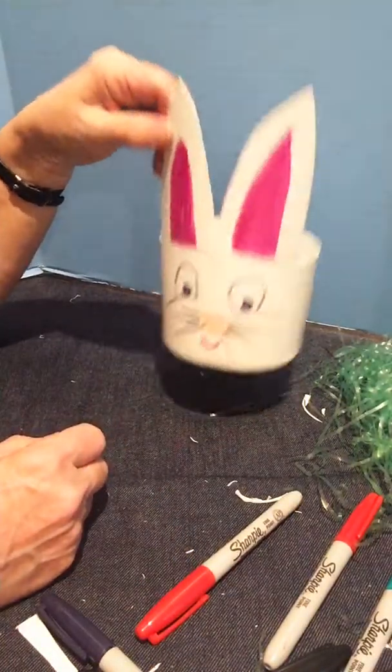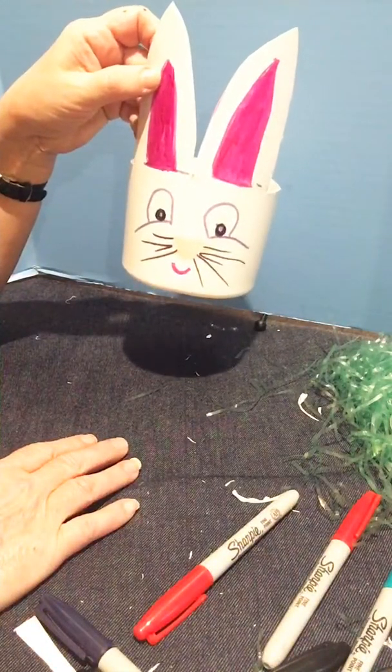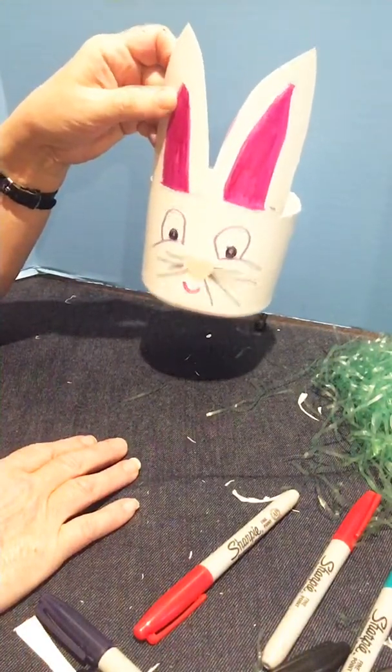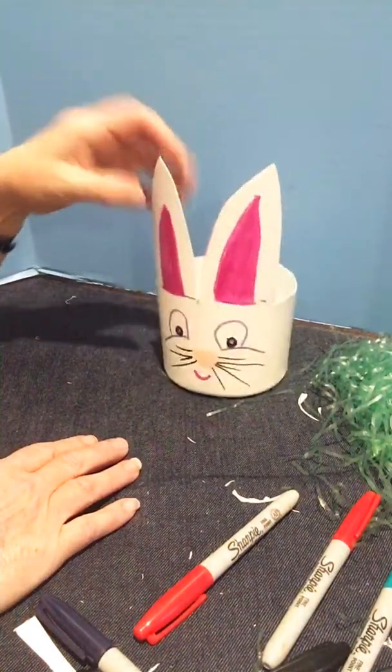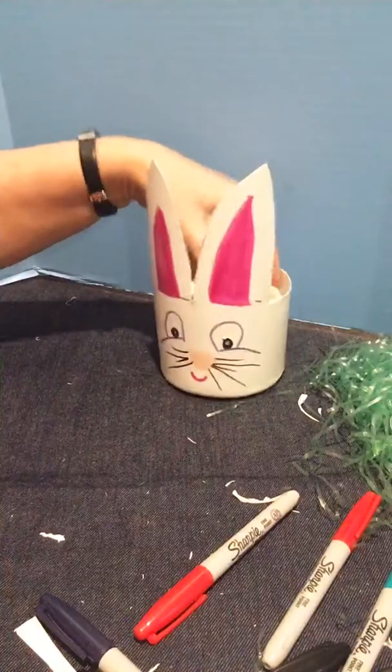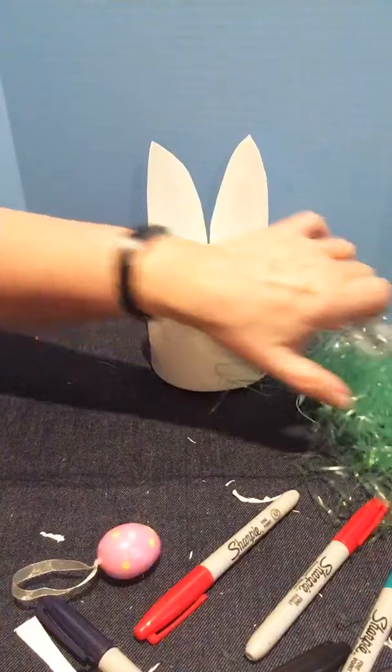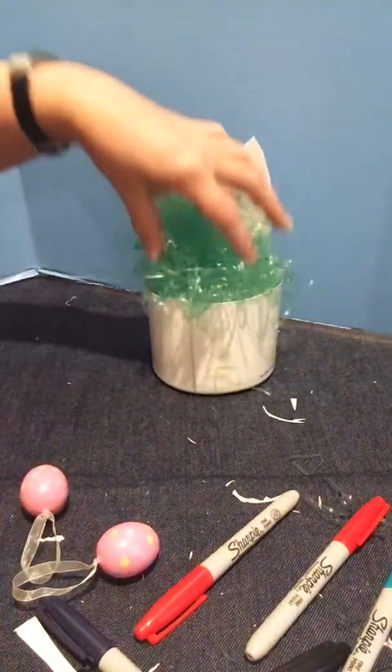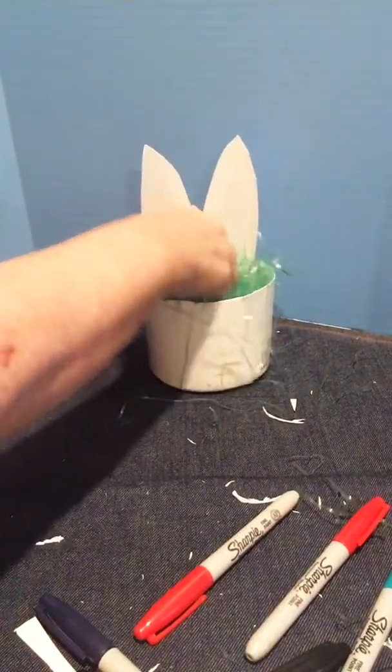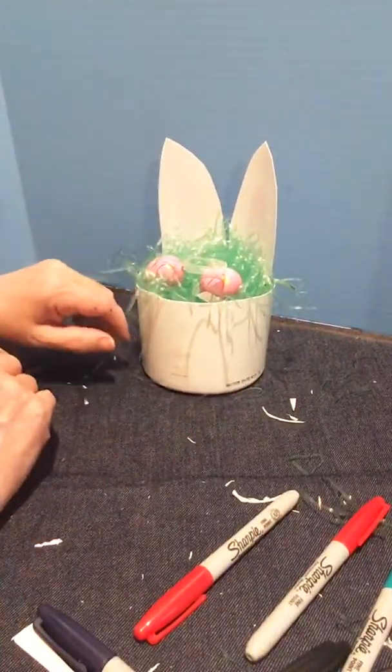Well, this is my Clorox container. Sometimes that southern drawl and twisted tongue gets in my way. We made this from a Clorox container that has the wipes in it, and we've got a little Easter basket. Now, I have a little Easter grass, but I'm not sure that's enough, so I'm going to stick something in there first. And then we're going to put our Easter grass on top. Oh, we forgot to draw his tail.